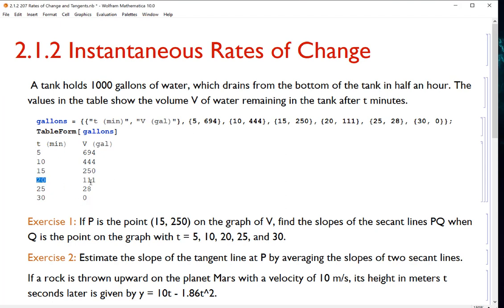For example, at 20 minutes, we have 111 gallons remaining. At 25 minutes, we have 28 gallons remaining. At 30, the tank is empty at zero. Now imagine that we are graphing this. We have a V axis and a T axis. So exercise one says if P is the point (15, 250) on the graph V, and if you want we can think of this as V of T, because T is our input.